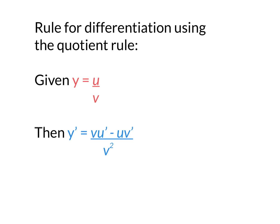Our rule for using differentiation with the quotient rule is if you're given one function divided by another, that's what quotient stands for, division. Then y dash becomes vu dash minus uv dash all over v squared. We let the numerator be u and the denominator is v, and that's how we get our formula.